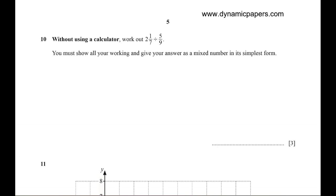Two times seven equals fourteen, plus one equals fifteen over seven, divided by five over nine. By applying the rule keep-flip-change: keep fifteen over seven, flip five over nine to nine over five, change the division to multiplication.